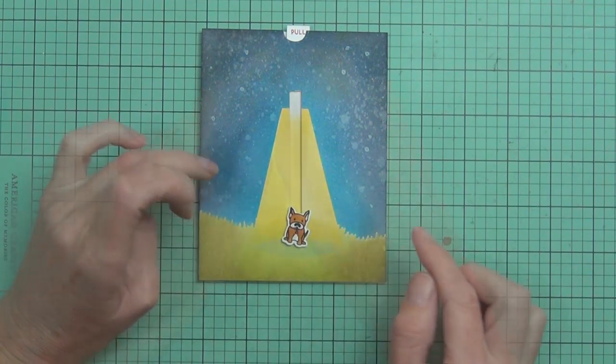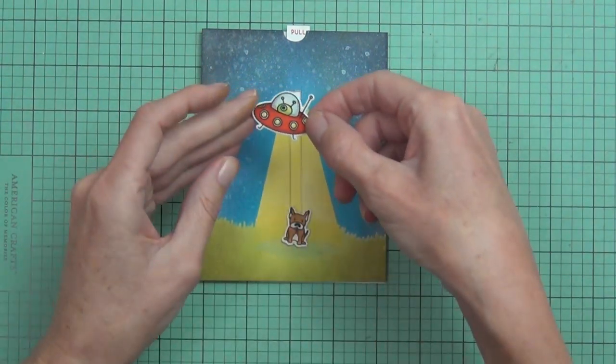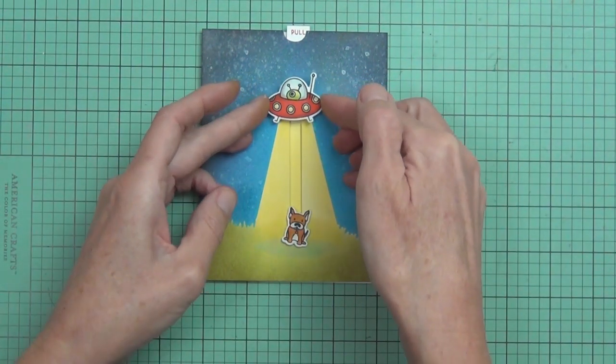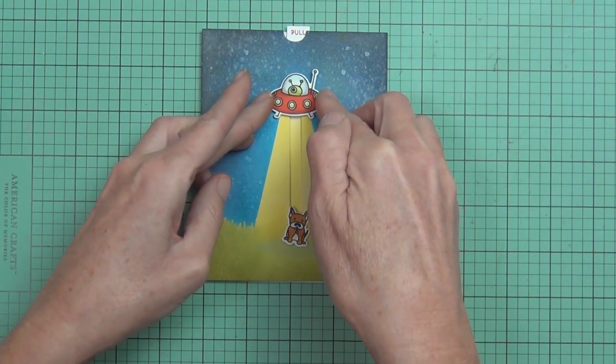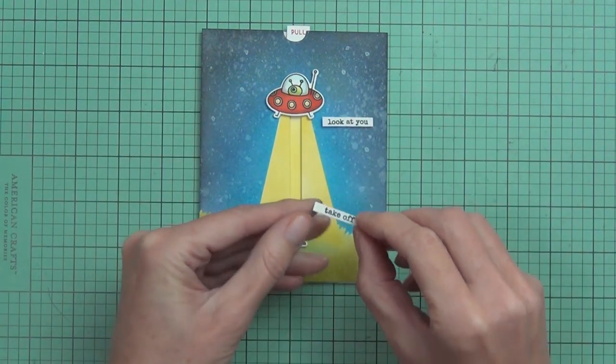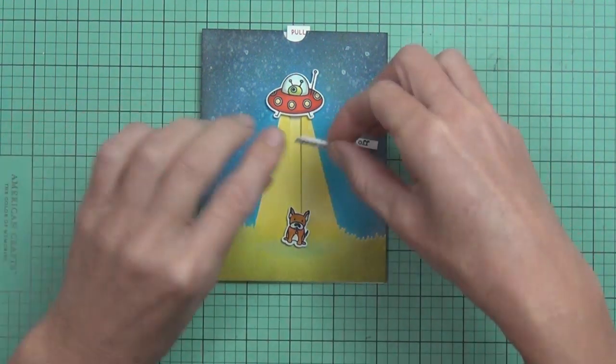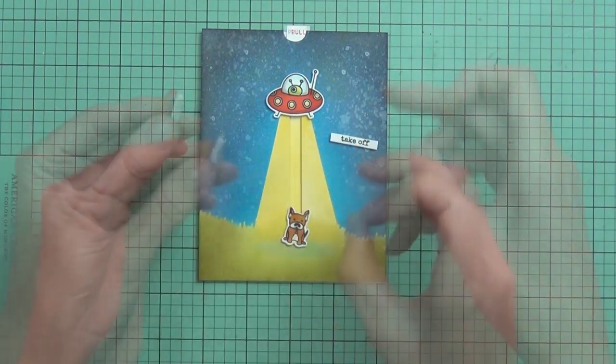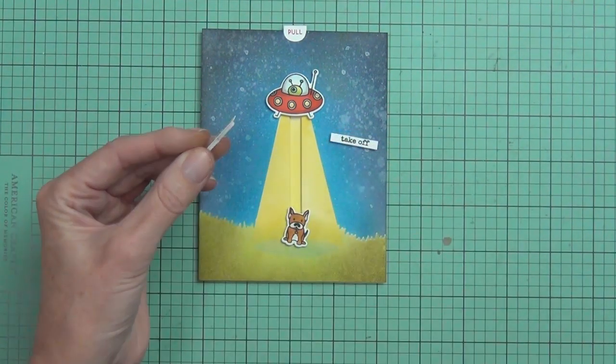How cool is this set? This Space Out set is so much fun, and I added a little Martian inside there by masking the image, so you can use any of the images within it. I'm adding a sentiment from the same stamp set and I just cut it a bit wonkily with my scissors and popped it up with some foam as well.